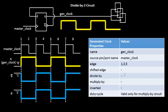Any clock waveform generated by binary division of the master clock can be represented by an edge option as well. However, the reverse is not always true. A waveform that can only be defined by its edge characteristics may not be representable by a divide-by-2 characteristic. Any binary division can be represented by an edge option, but not every edge-defined clock can be reduced to a divide-by circuit.